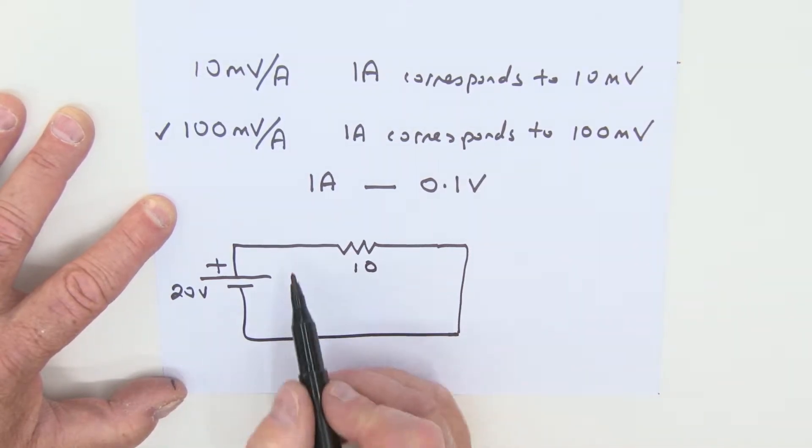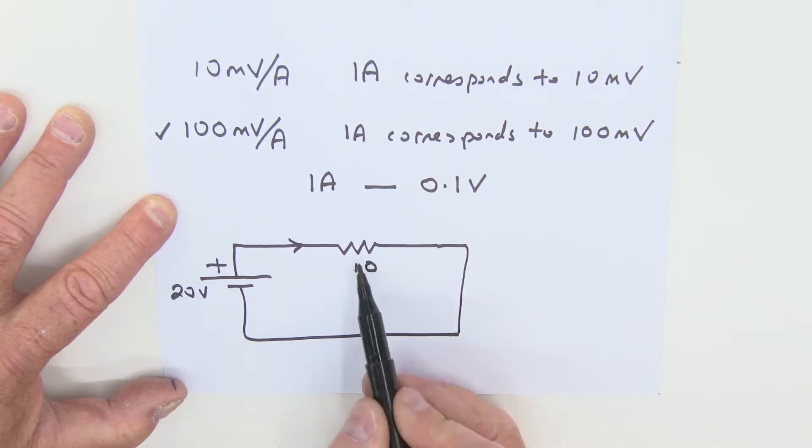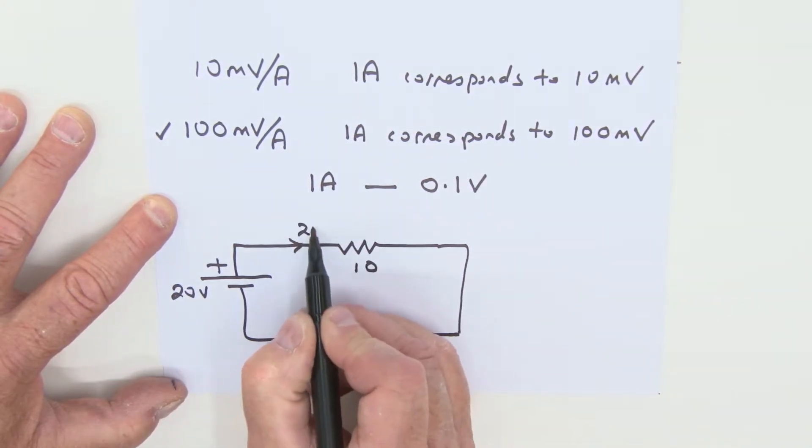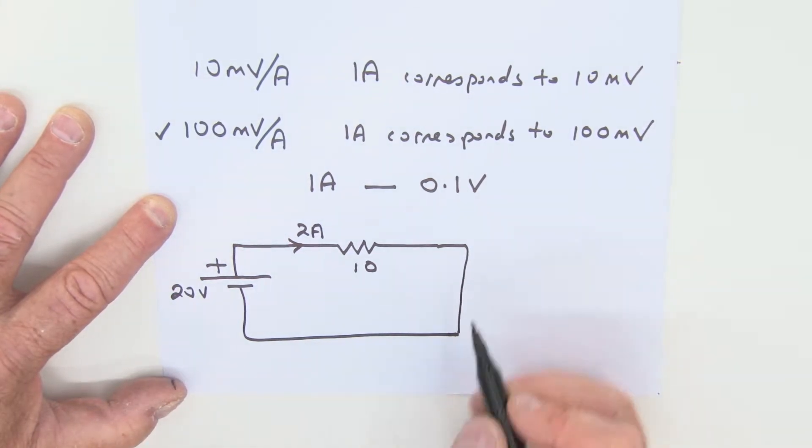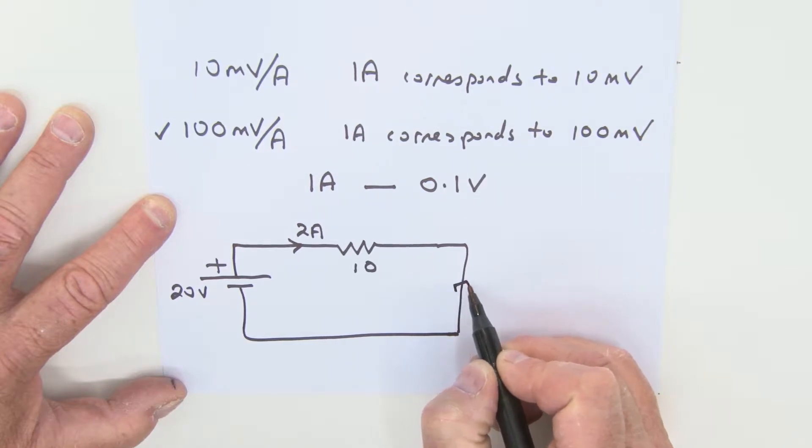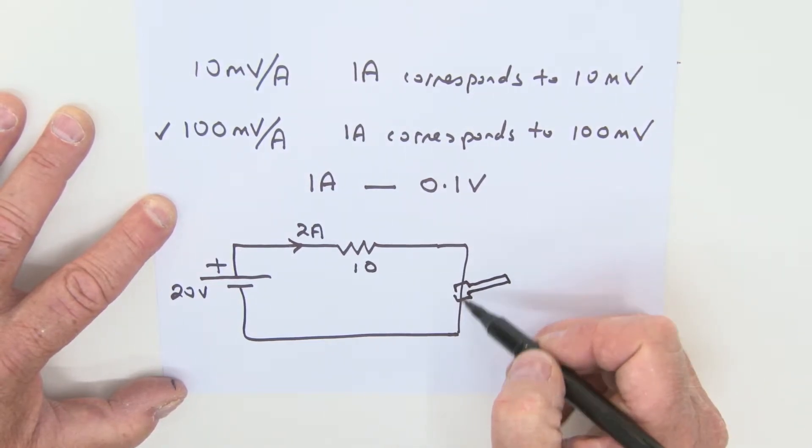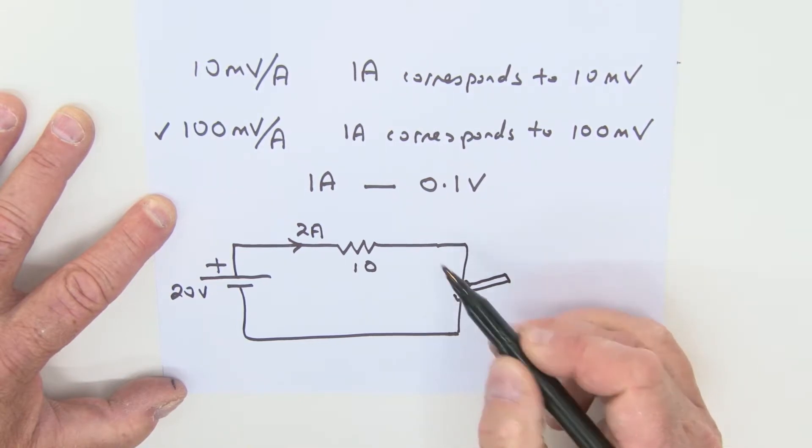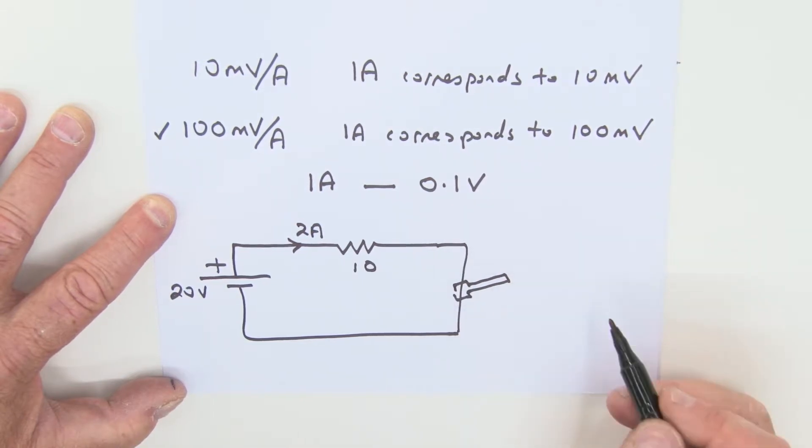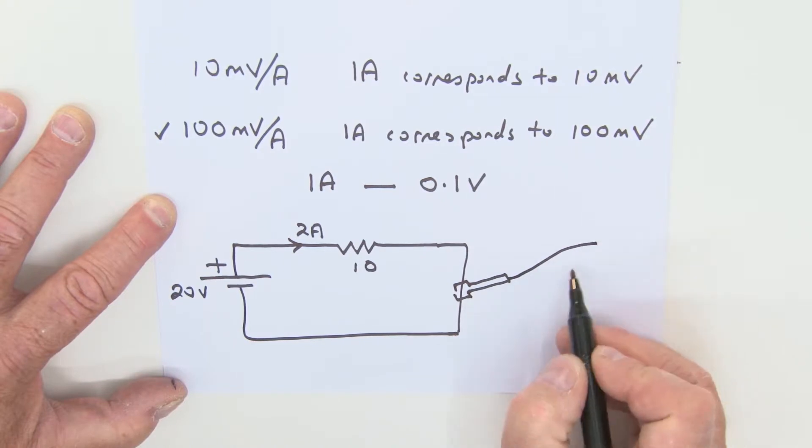Now by Ohm's law, the current that's flowing in that circuit is simply going to be the 20 volts divided by the 10 ohms, which is two amps. So what we're going to do is we're going to take our current probe, and we're going to simply clamp it to our cable like so. Making sure though that the arrow is in this direction here, the same direction of the actual current flow. And then of course, this then connects over to the oscilloscope.